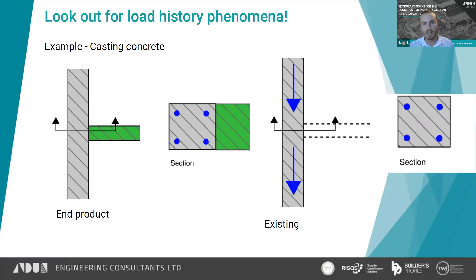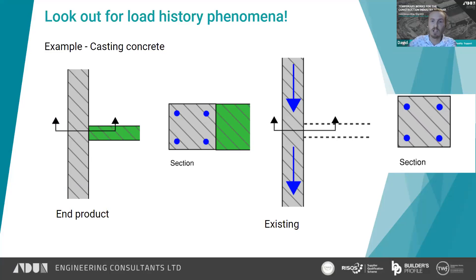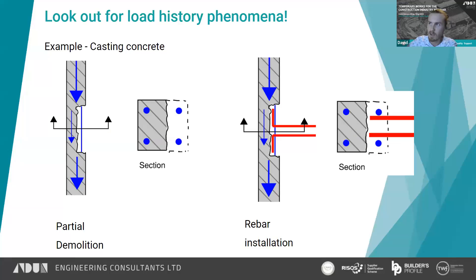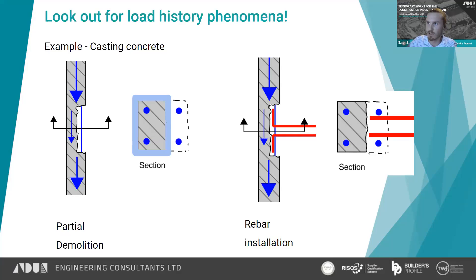Here is a fairly simple example to illustrate the point. You're going to be casting a new RC beam into an existing RC column with structure above it - the green is the new bit, grey is the existing. At the moment the load is fairly concentrically loading that column with an even stress distribution, assuming no moments. To enable construction of the new beam you break out part of the column, so the load from that beam is now being transmitted through the remaining section of column with higher stress in that section. The new beam is then cast in with L-bars.